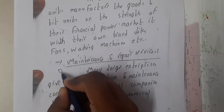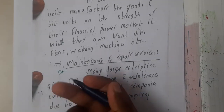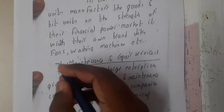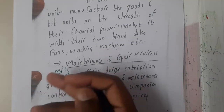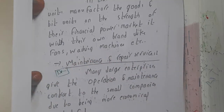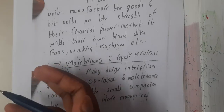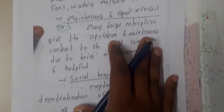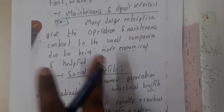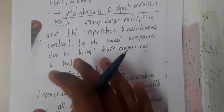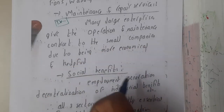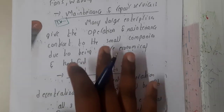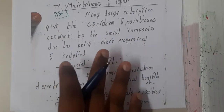Similarly, maintenance and repair — whenever large scale industries build some components, if they handle all repair services themselves, that could be an issue. That is why maintenance services are given to small scale industries, so they get employment and can earn money. Additionally, social benefits — only a single large scale industry will not help the society. We need all three industries in a proper linkage, where one is helping the others.